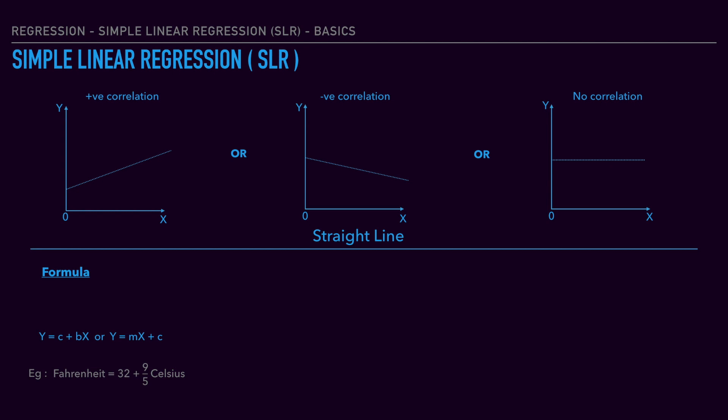For better understanding, consider a real-time example. That is converting Celsius into Fahrenheit. Here, Fahrenheit is the output, Celsius is the input. The formula is Fahrenheit = 32 + (9/5) × Celsius. Here, Fahrenheit is y, 32 is the constant c, 9/5 is the coefficient of x, and Celsius is the input variable x.